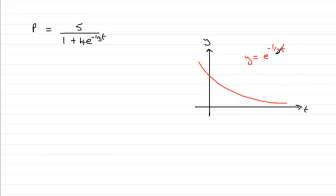So, we can see that as t gets larger, we can just say here, as t tends to infinity, the term e to the minus a third t tends to zero.